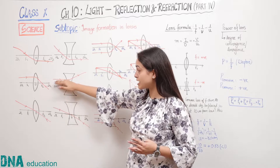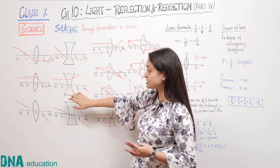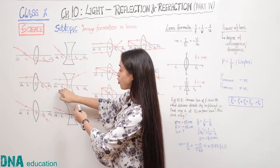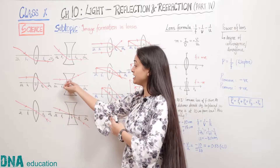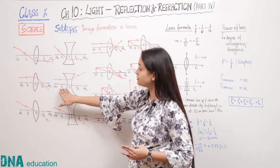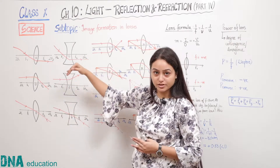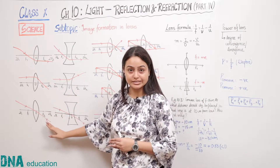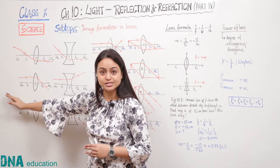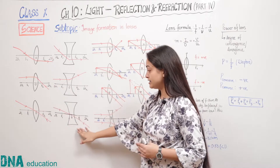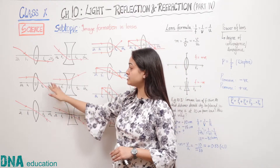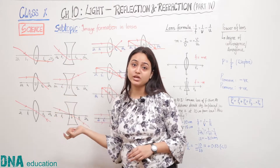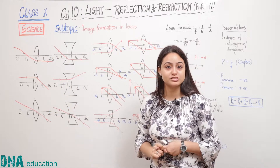If the light ray is coming parallel to the principal axis in case of a concave lens, then it will diverge from focus — that is, the light ray diverges and it appears as if it diverges from focus. The next rule is: if a light ray falls on the optical center, then it will retrace its path without any deviation. The same applies for the concave lens. So, these are the three basic rules we can use for formation of images in lenses.